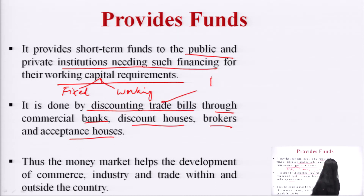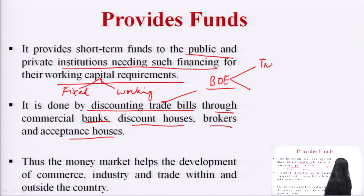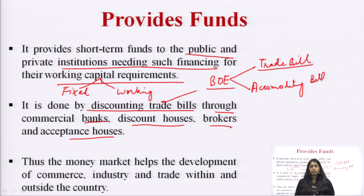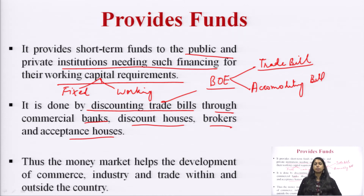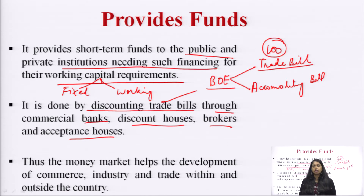Funds are also obtained by discounting trade bills through commercial banks, discount houses, brokers, and acceptance houses. Trade bills are bills of exchange — there is a drawer who sells goods and a drawee who signs to make payment. Bills of exchange are of two types: trade bills and accommodation bills. When you need money before the bill's maturity, you can discount it at the bank — for example, getting 95 rupees against a 100-rupee bill due on the 15th of November.